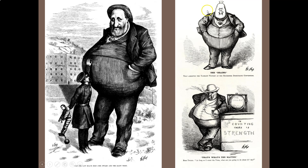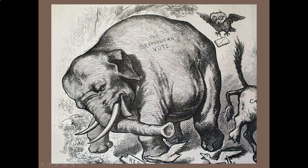Here in one of Nast's cartoons, Boss Tweed's head is just a sack of money, and here he is controlling the votes. By the way, Thomas Nast is also responsible for the elephant being the symbol of the Republican Party — he was the first to actually draw the Republicans as an elephant.